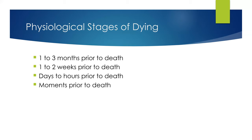Now we'll look at the physiological stages of dying. One to three months prior to death, the patient begins to withdraw from the world, sleeps more, finds it difficult to digest food especially meat, and has decreased appetite and food intake. They prefer to drink only liquids. Anorexia may develop, which can actually be protective — the resulting ketosis from not eating may diminish pain and increase the patient's sense of well-being.